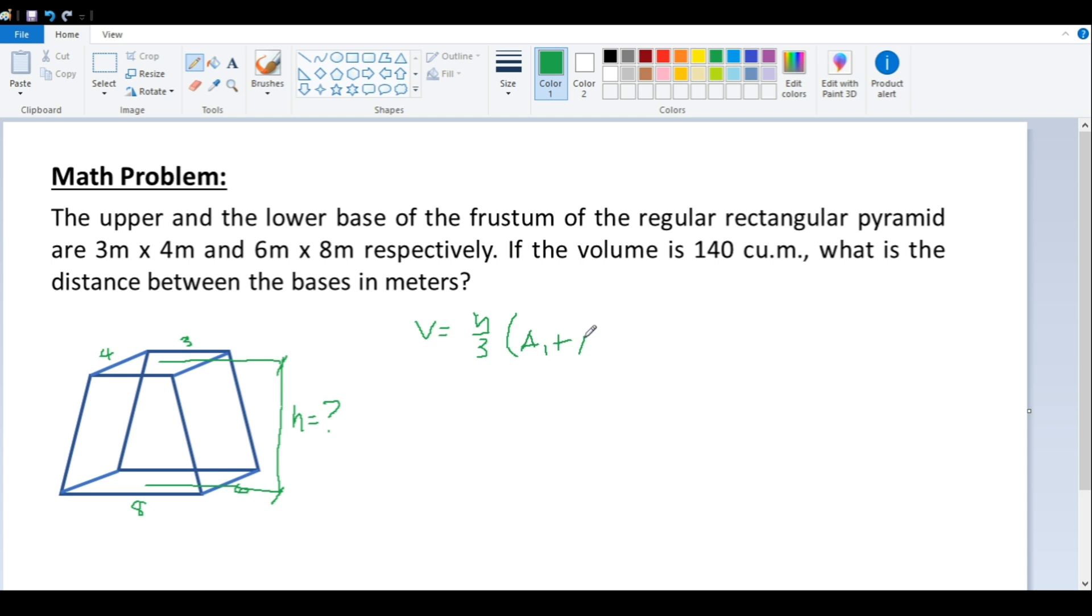This is the formula for getting the height of the frustum of a regular rectangular pyramid. So we have a given volume that is 140, direct substitution now, so this will be easy.